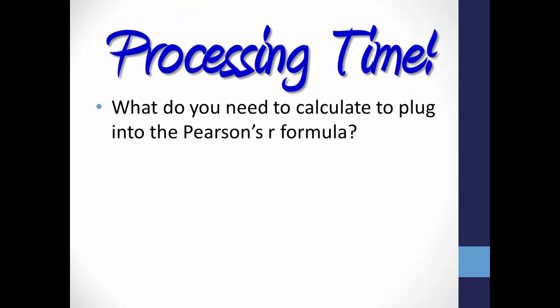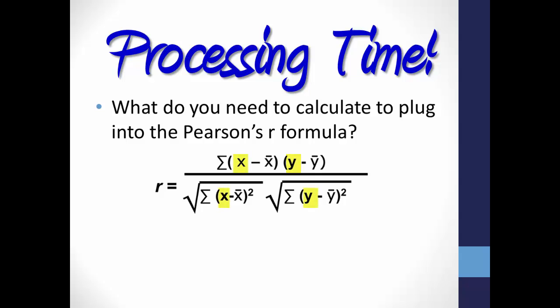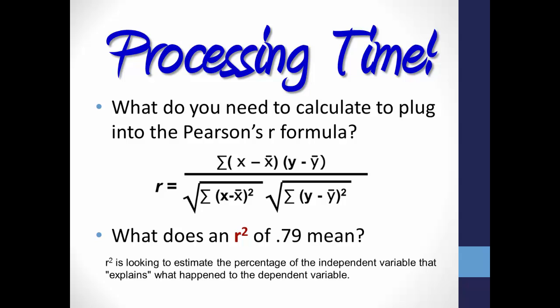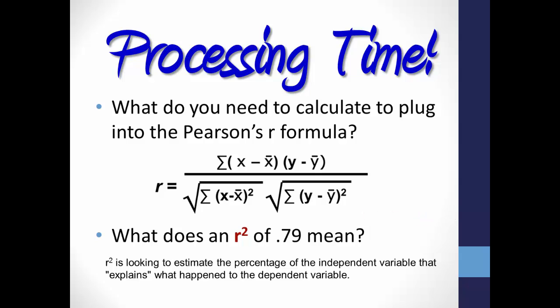What do you need to calculate to plug into the Pearson's r formula? Really, all you need is the raw data — the actual scores — for each variable, so that you can calculate the means for the x and y variables. Once you do this, if you can add, subtract, multiply, divide, square, and do a square root, you can calculate the r value. What does an r squared of 0.79 mean? R squared estimates the percentage of the independent variable that explains what happened to the dependent variable in a linear model. An r squared of 0 indicates the model explains 0% of the variability, while an r squared of 0.79 means that about 79% of the variation can be explained, which is a pretty high percentage.